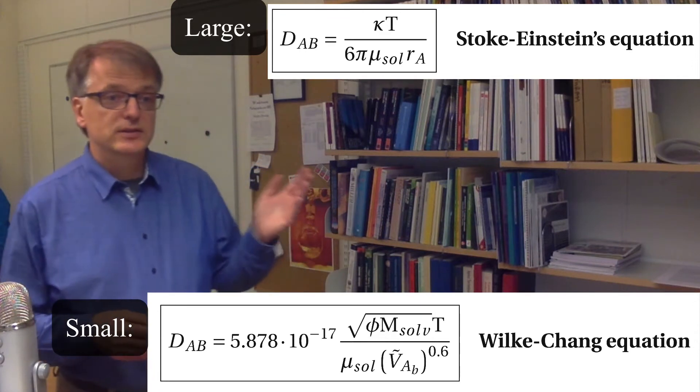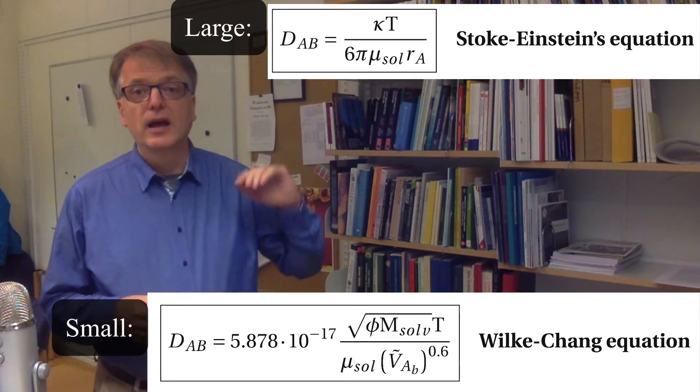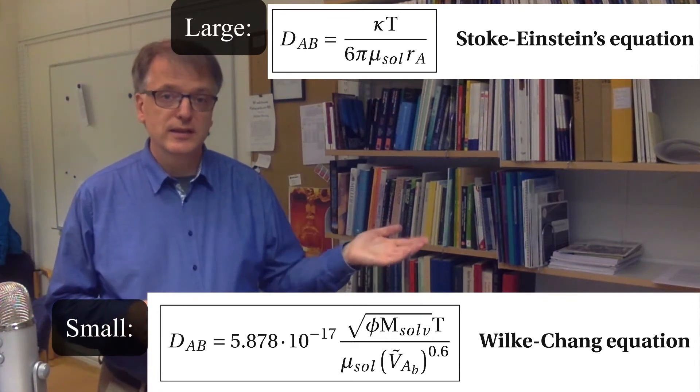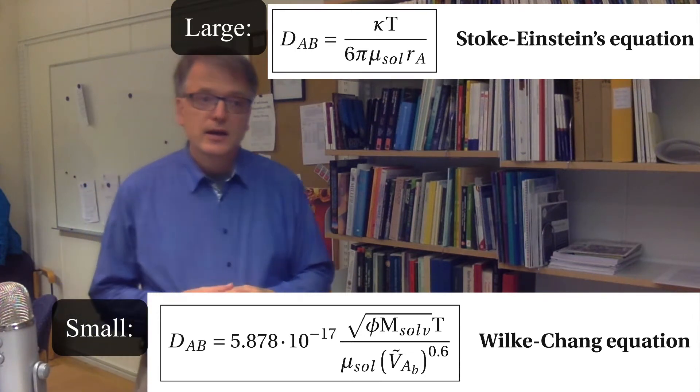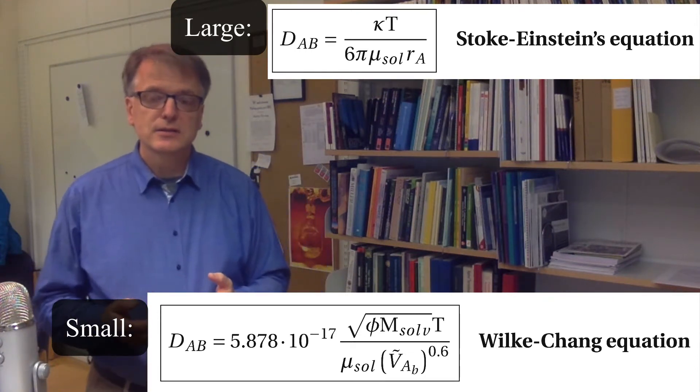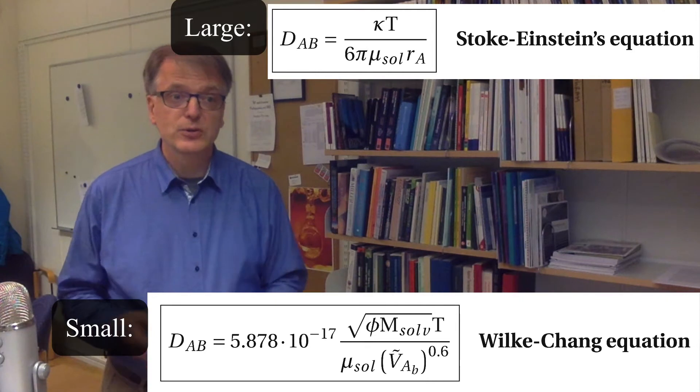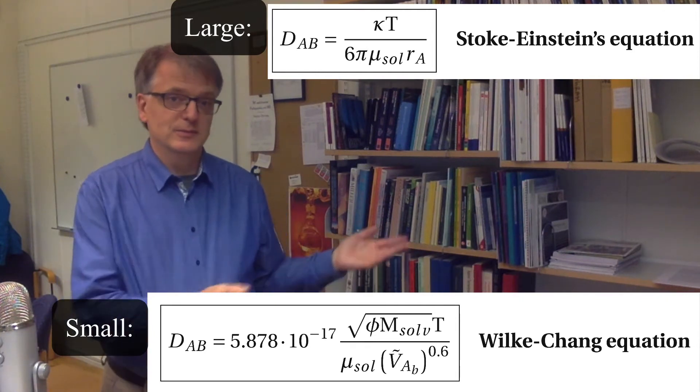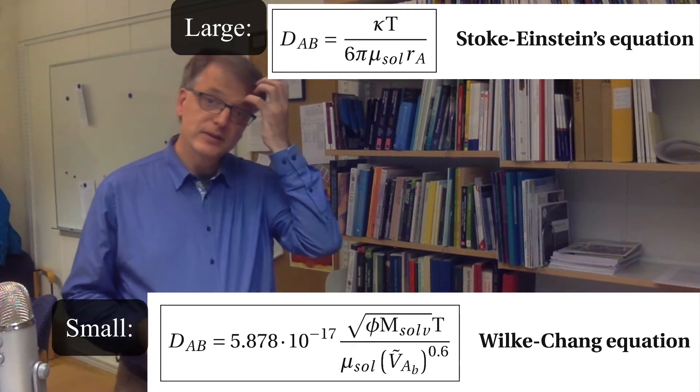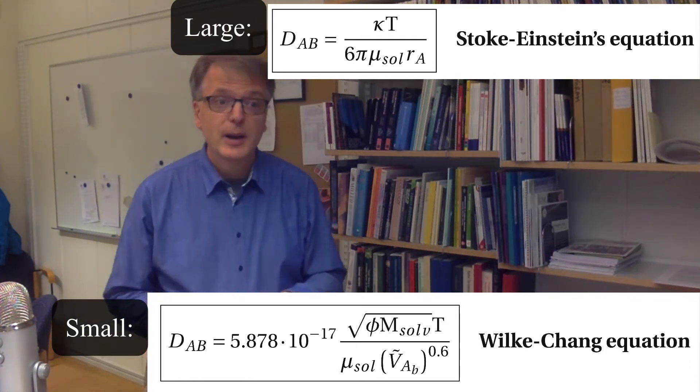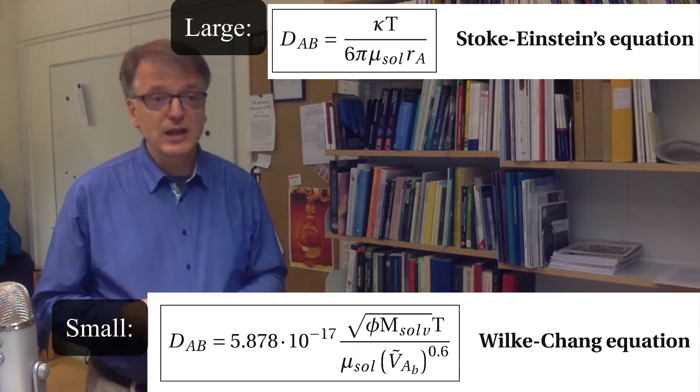The Stoke-Einstein equation looks like this, and the Wilke-Chang equation looks like this. The Wilke-Chang equation is much more difficult to understand why it looks like it does, so it's not easy to derive, but it gets reasonable results.